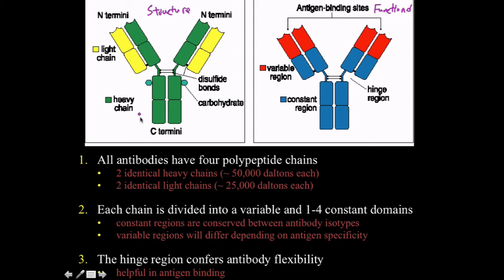Antibodies are made up of two identical heavy chains and two identical light chains, so both antigen binding sites are going to be exactly the same. The average weight of these is about 150 kilodaltons.